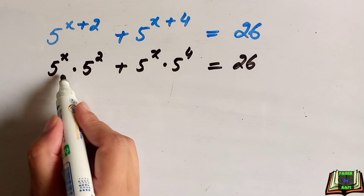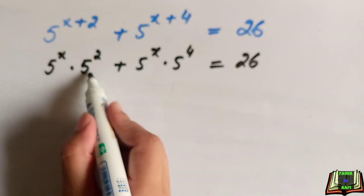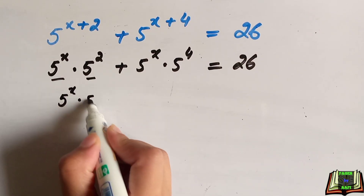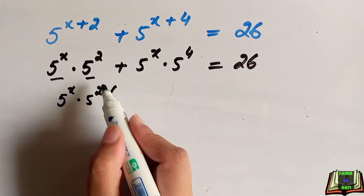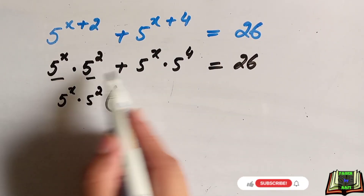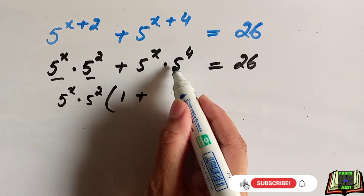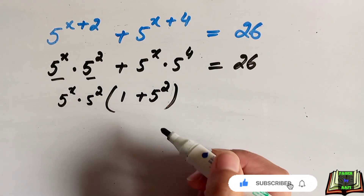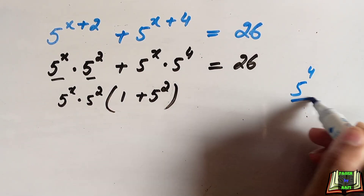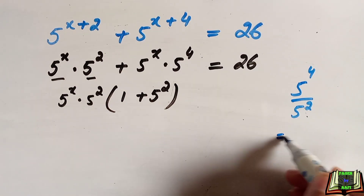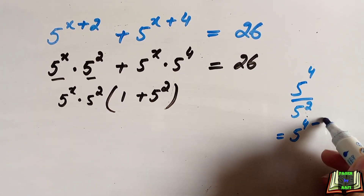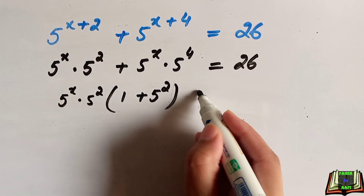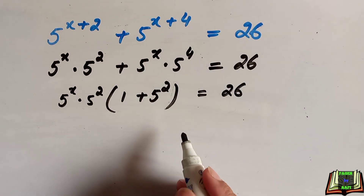In the next step, 5 to the power x into 5 to the power 2 is common, so we factor it out. What remains inside the bracket: dividing 5 to the power x into 5 to the power 4 by 5 to the power 2 gives 5 to the power 4 minus 2, which equals 5 to the power 2. So we have 5 to the power x into 5 to the power 2, times the bracket, all equal to 26.